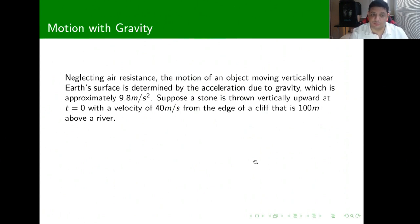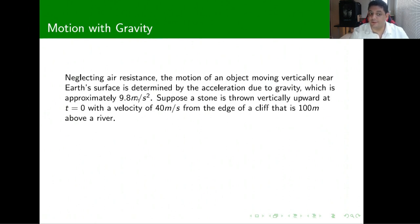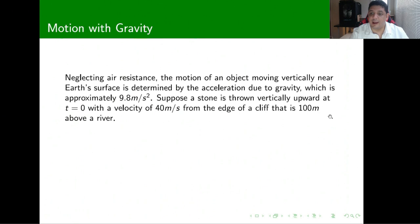Now let's look at another example: motion with gravity. Neglecting air resistance, the motion of an object moving vertically near the Earth's surface is given by the acceleration due to gravity, approximated as 9.8 meters per second squared. Suppose a stone is thrown vertically upward at t equals 0 with a speed of 40 meters per second from the edge of a cliff that is 100 meters above a river.